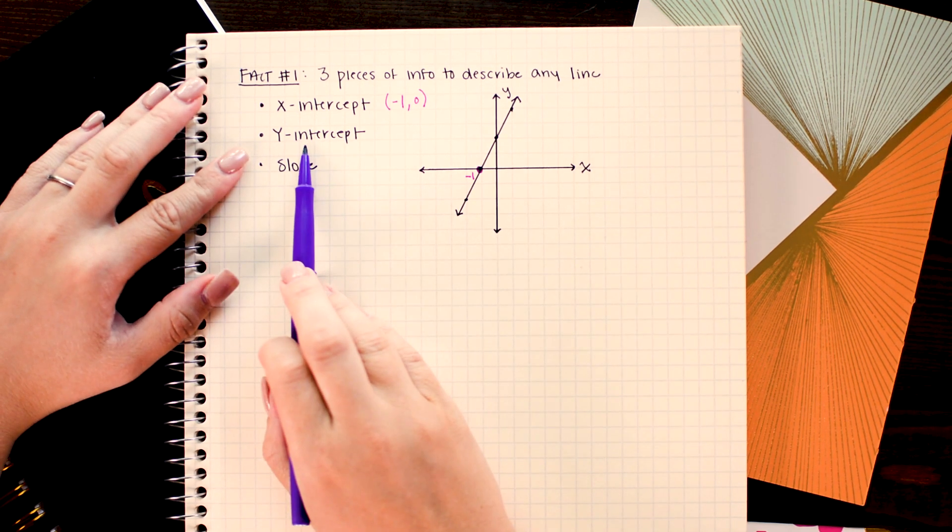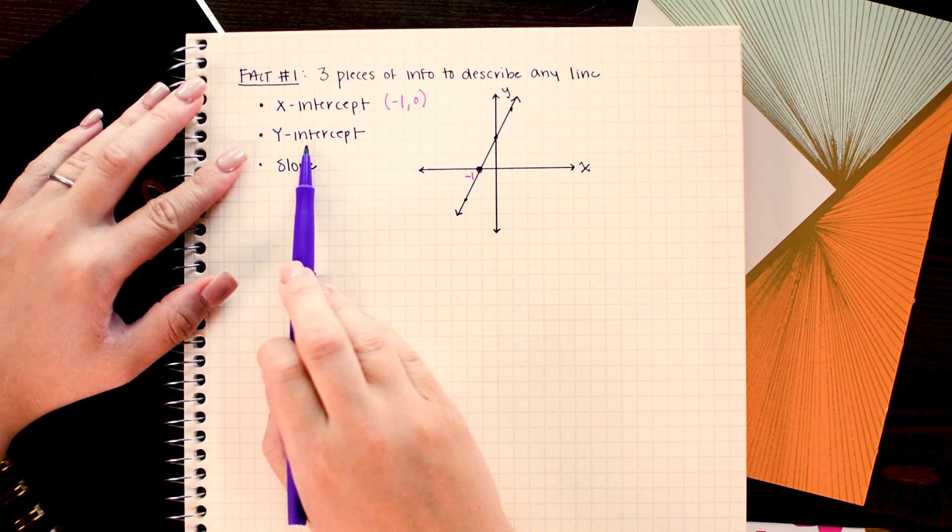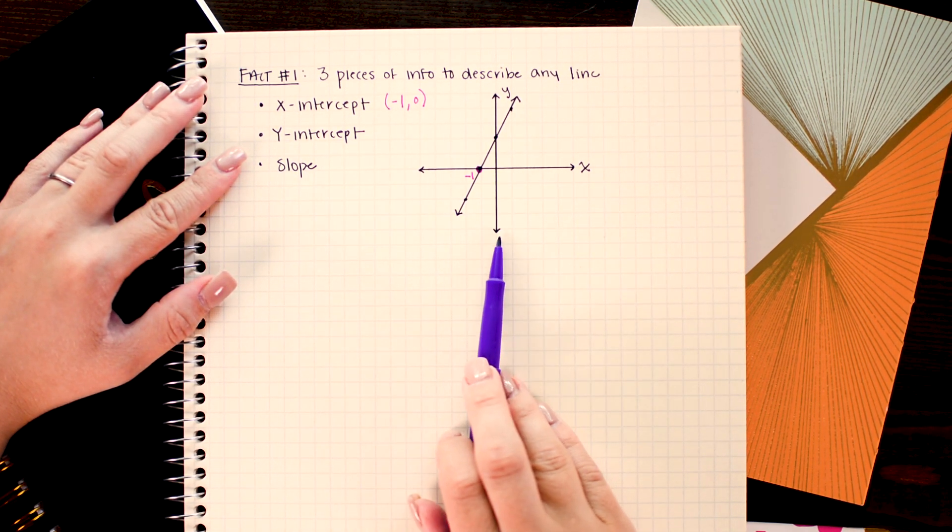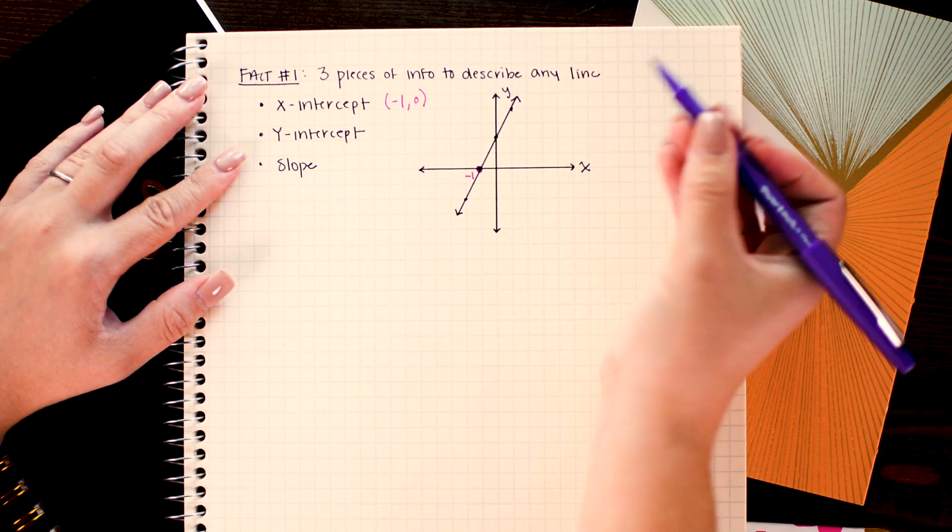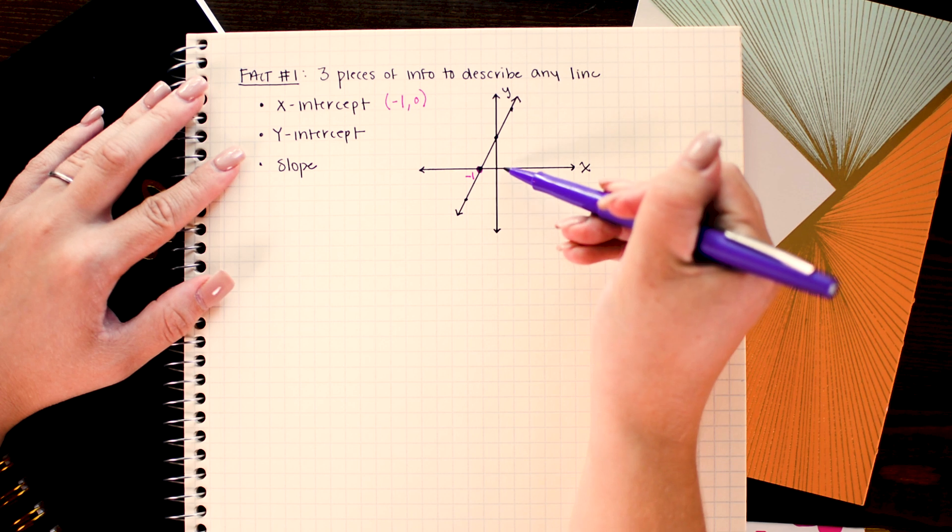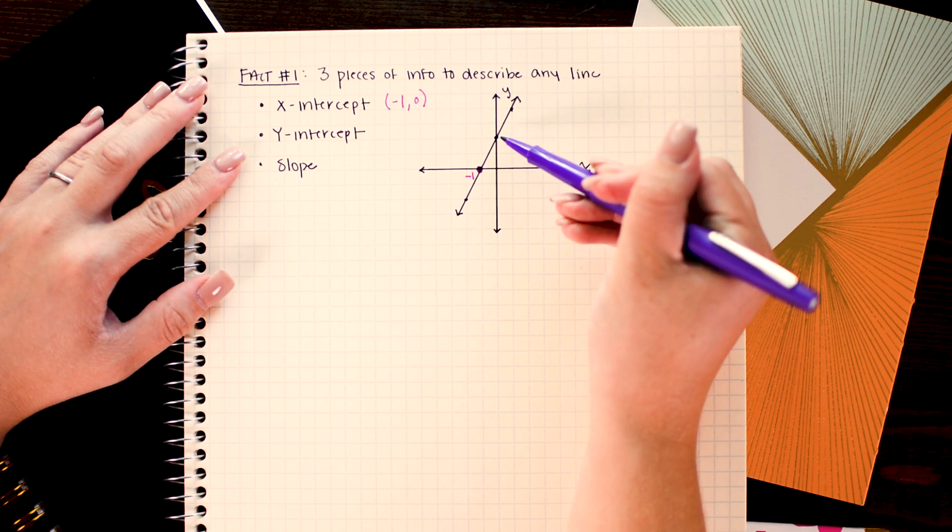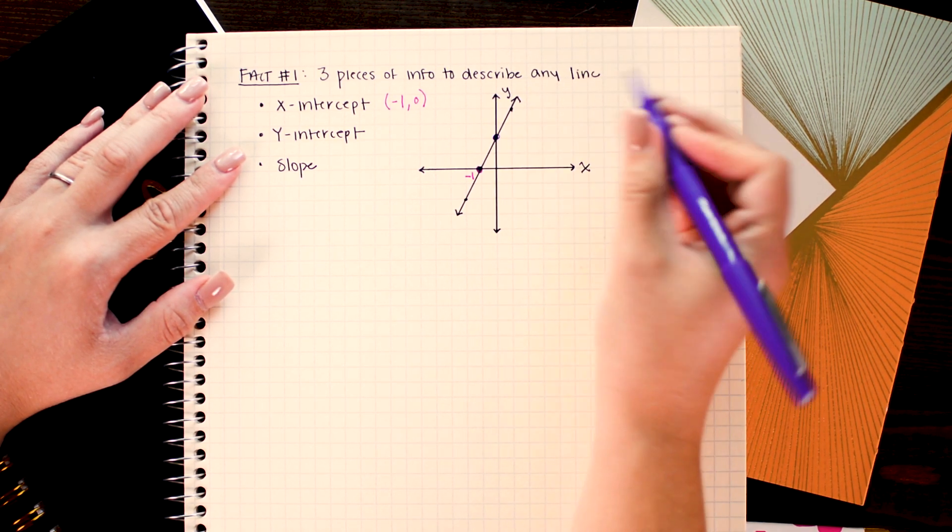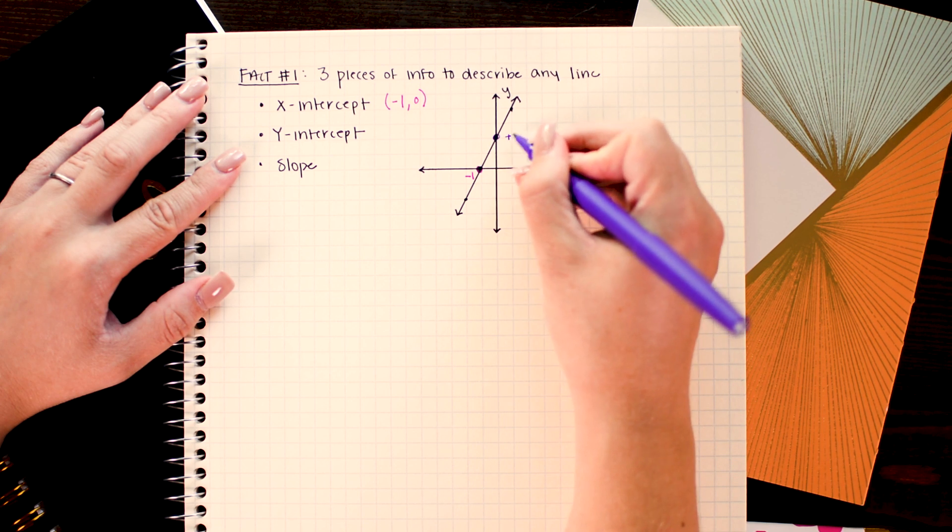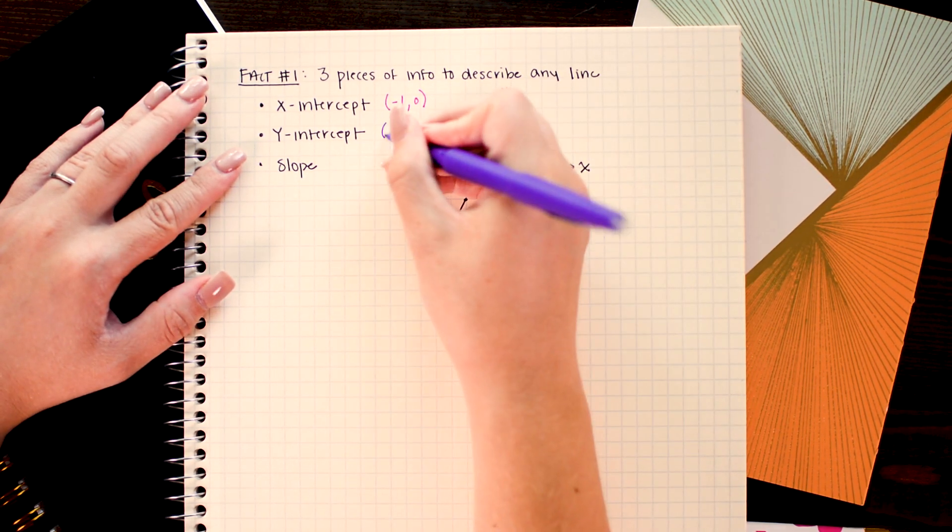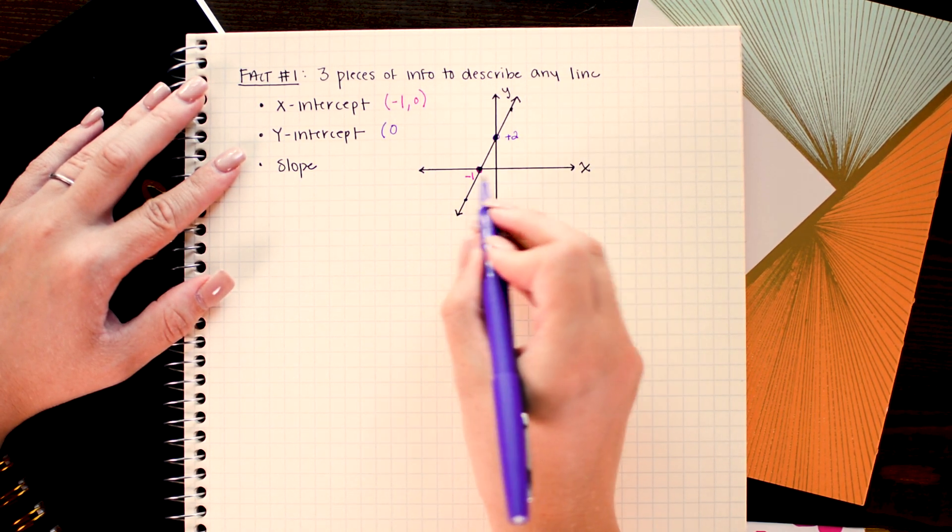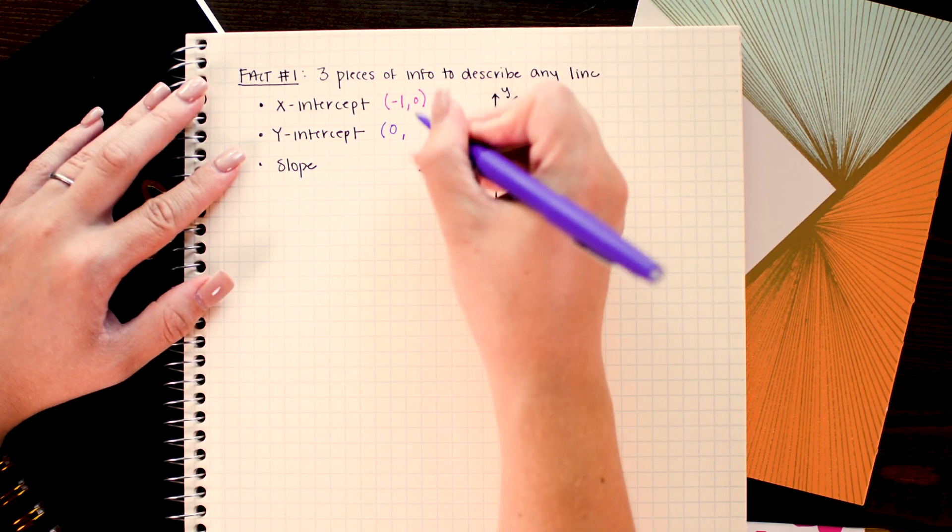Likewise the y-intercept is where our line crosses the y or vertical axis. In our example here we cross the y-axis two units up, right here. So this point is at positive two. We would write that as the point zero, two since we went left and right none and two up.